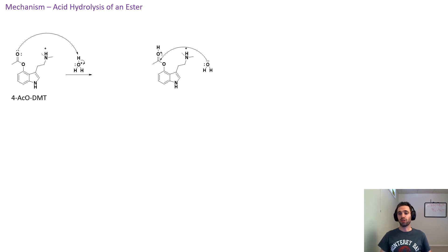Next up in the mechanism, a lone pair of electrons on the water attacks the carbonyl, which forces electrons from the carbonyl onto the oxygen, taking away the positive charge. This gives us the intermediate where we have the positively charged oxygen with the water molecule attached.